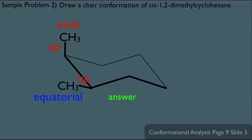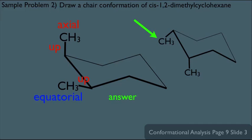I recommend trying to draw this same structure but make the first methyl equatorial and see what you get. You can pause the video and try it, then I'll show you the answer. If you did it correctly, this is what you should get: a methyl pointing downward that happens to be equatorial, and another methyl also pointing downward, but downward happens to be axial at this location on the ring. So these are the two versions of cis-1,2-dimethylcyclohexane.